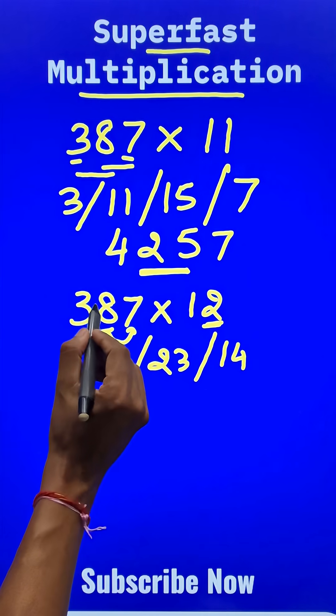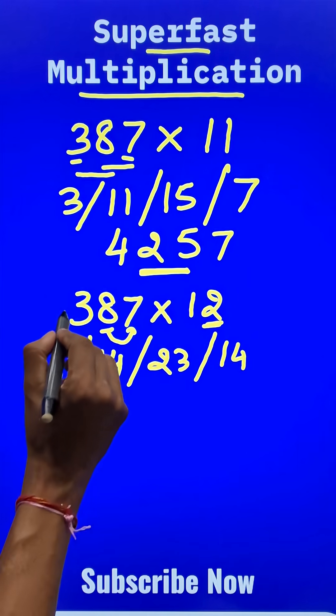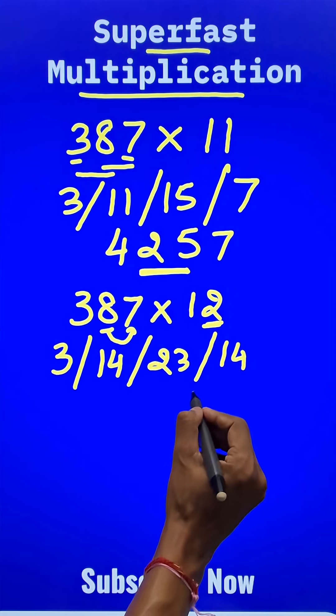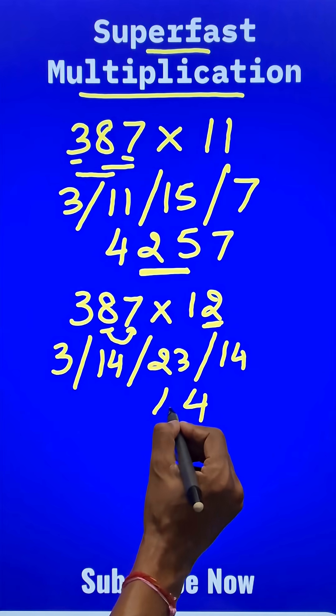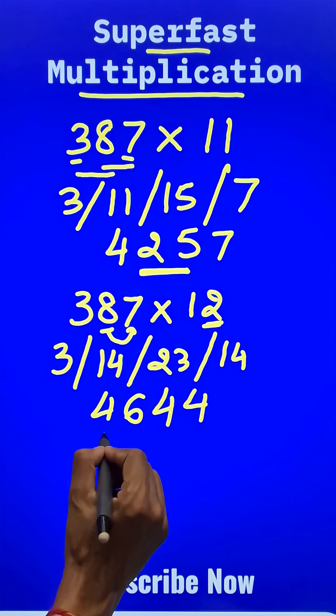Then similarly, 3 twos are 6, 6 plus 8 is 14, and finally the 3 is to be written as such. Now start writing from the unit digit: 4, 1 carry, 24 means 4, 2 carry, 16 means 6, 1 carry, 4.